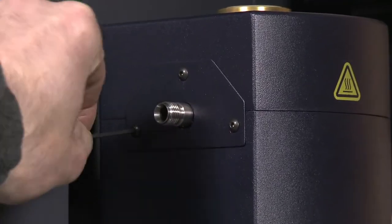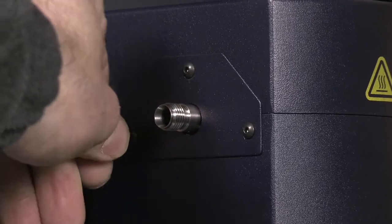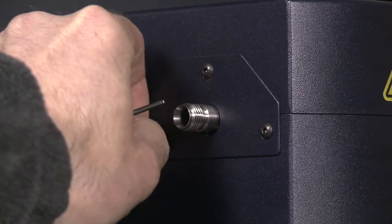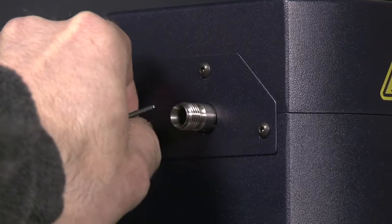We start by removing the standard furnace outlet. Using a hex key, remove the three screws that hold the dress cover in place, then remove the dress cover exposing the exhaust outlet.